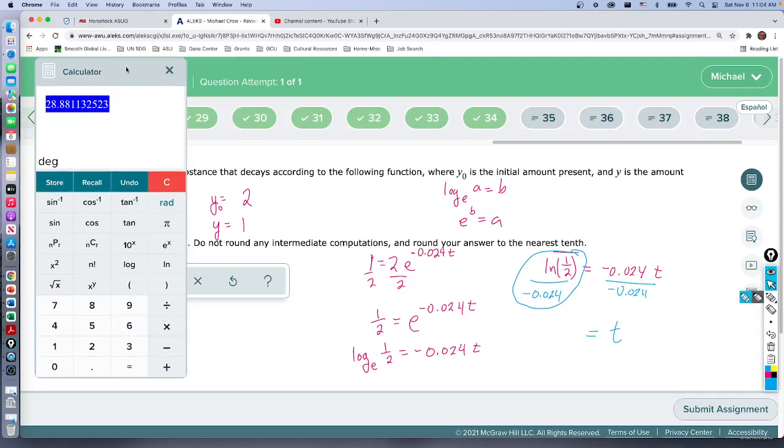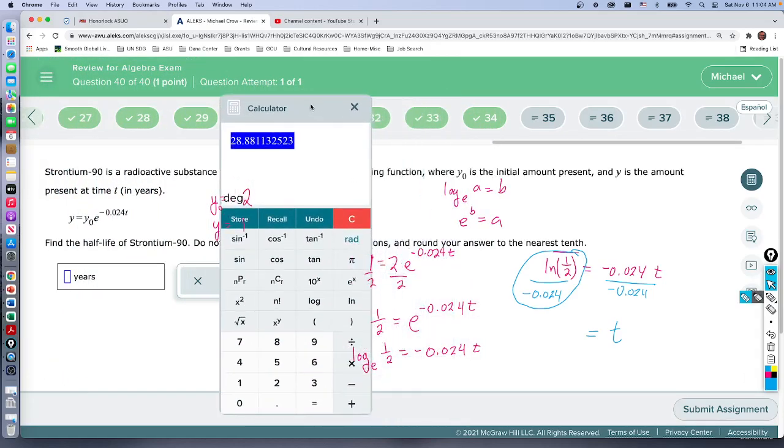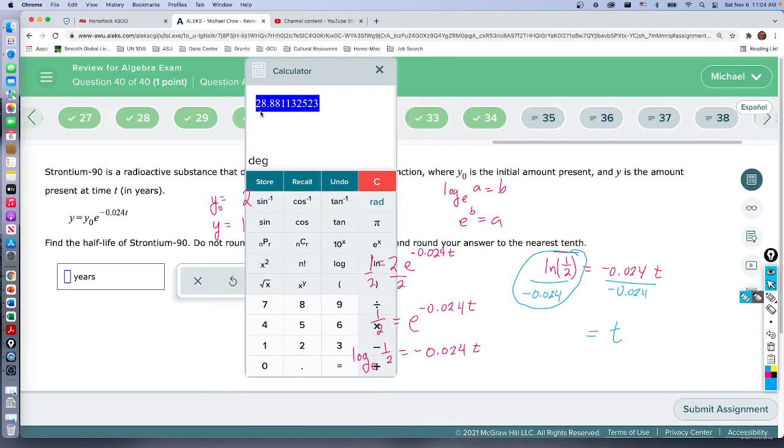Make sure you get all your decimals correct and we'll hit enter. So the nearest tenth, that's 28 - this is in years, right? 28.9 years.